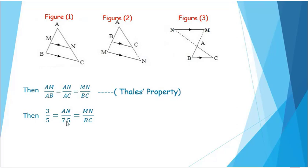So 3 over 5 equals AN over 7.5. Therefore AN equals 3 times 7.5 over 5, then AN equals 4.5 centimeters.